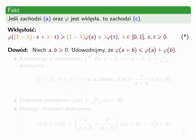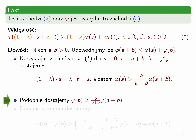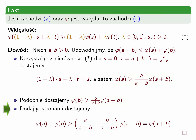Jest to równoważne temu, że obszar pod wykresem zaznaczony na żółto jest zbiorem wypukłym. Dowód faktu: wybieramy dowolne liczby a i b nieujemne i udowodnimy, że φ(a+b) ≤ φ(a) + φ(b). Korzystając z nierówności wklęsłości dla s = 0, t = a+b oraz λ = a/(a+b), dostajemy φ(a) ≥ (a/(a+b))·φ(a+b). Podobnie, zamieniając rolami a i b, φ(b) ≥ (b/(a+b))·φ(a+b). Dodając stronami: φ(a) + φ(b) ≥ φ(a+b), co kończy dowód.